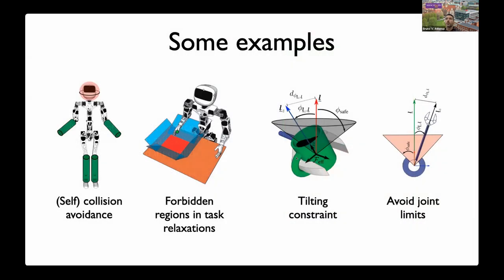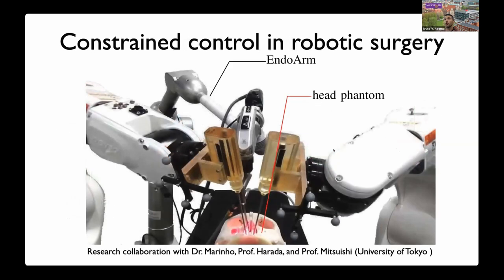We can use those ideas to introduce several constraints: self-collision avoidance, avoidance of workspace obstacles, forbidden regions where we don't want the robot to go, task relaxation such as constraining end-effector orientation using a tilting constraint, and avoiding joint limits.